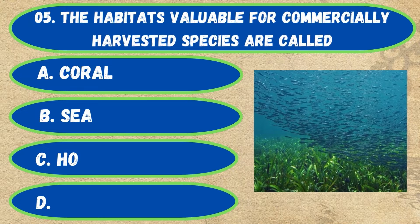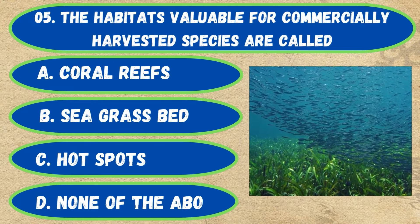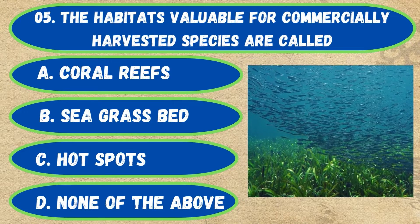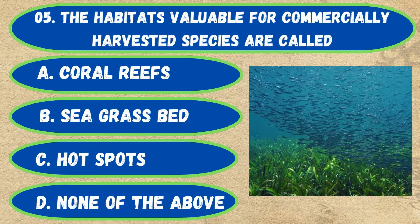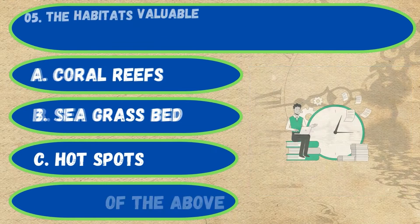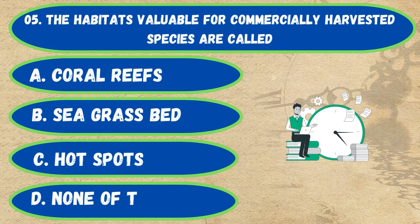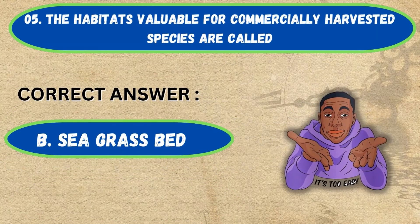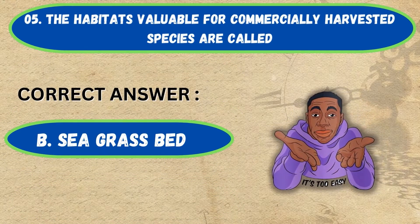Question number 5. The habitats valuable for commercially harvested species are called: option A, coral reefs; B, sea grass bed; C, hot spots; D, none of the above. The correct answer is option B, sea grass bed.